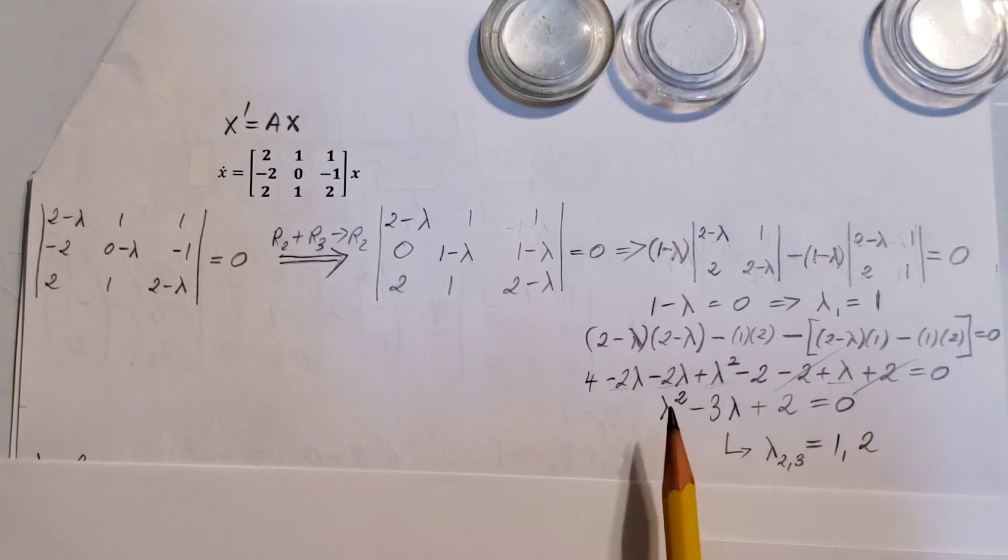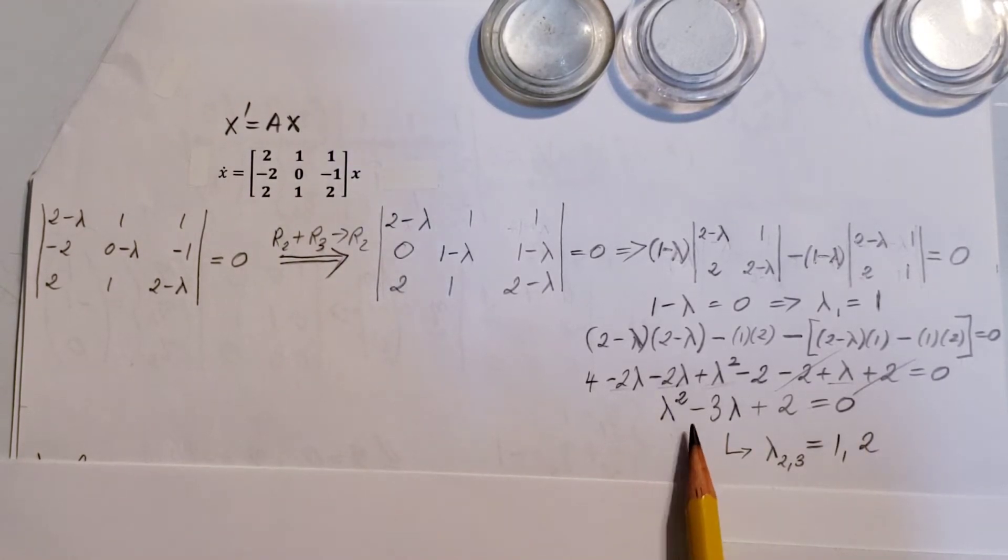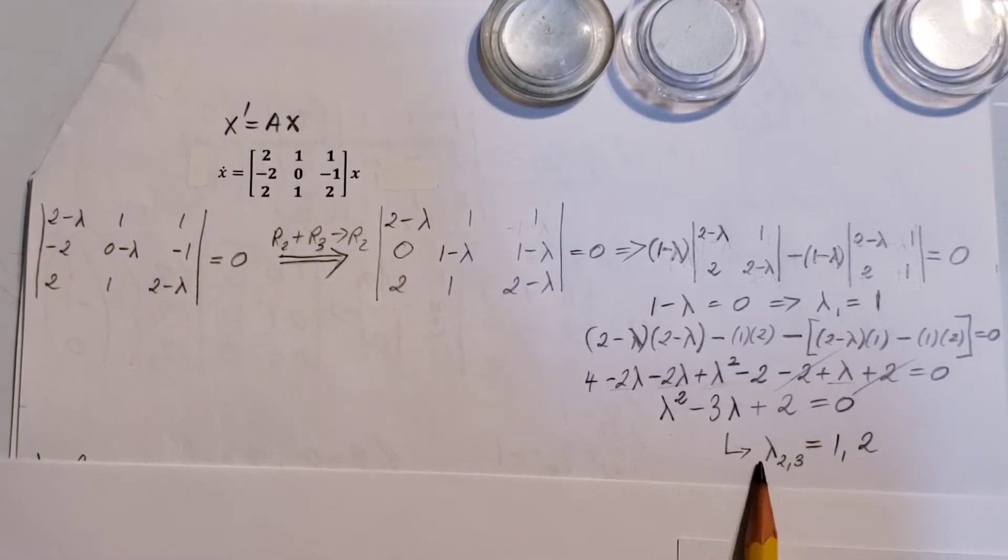Clean it up, and we're able to find a quadratic equation, lambda squared, minus 3 lambda, plus 2, equals 0. And the roots of this will give us our remaining two eigenvalues, lambda 2 and 3, which is 1 and 2.